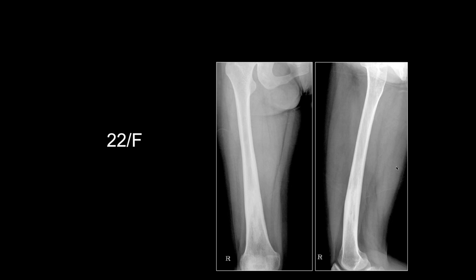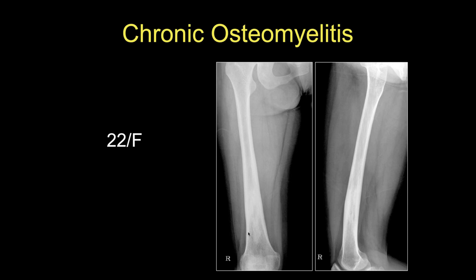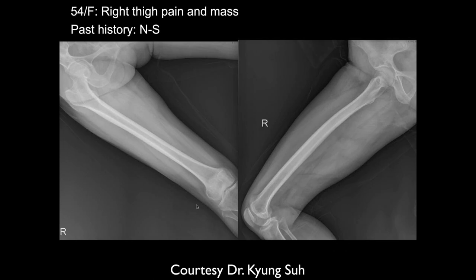A 22-year-old female shows cortical thickening and increased density in the distal femoral diaphysis — chronic remodeling consistent with chronic osteomyelitis, likely previously treated.